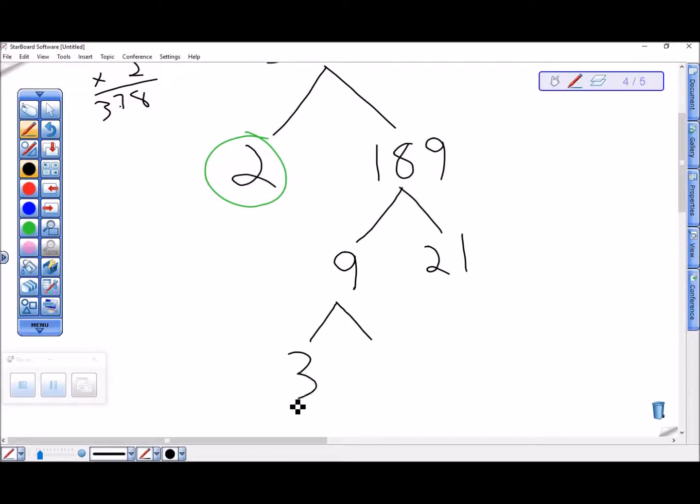9 is 3 times 3, and 3 times 3 is 9. Good. 21 is 3 times 7, and 3 is prime and 7 is prime.